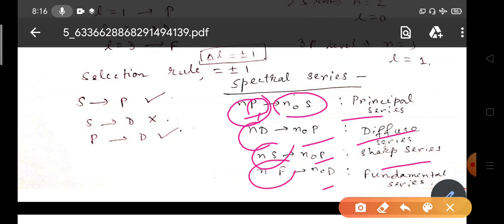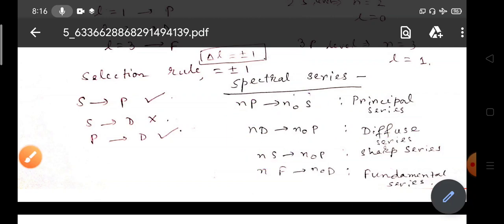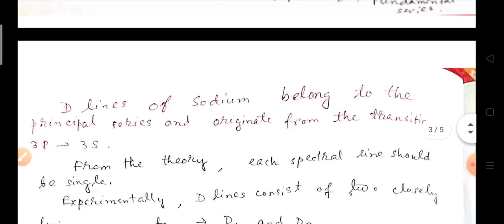How do I remember? I remember the first term: P is for principal, D is for diffuse, S is for sharp and F is for fundamental. These are the series that can be observed in case of alkali atomic spectrum.